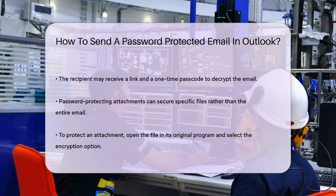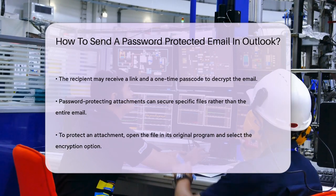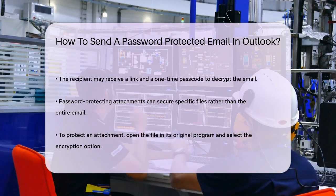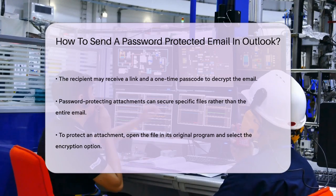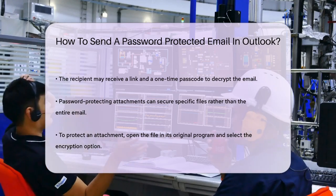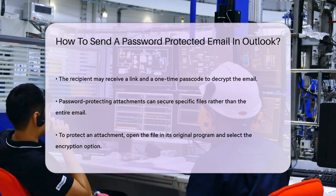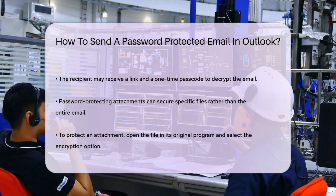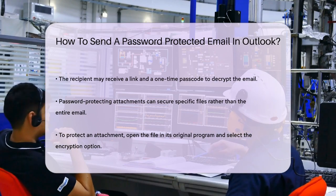For example, in Word, go to File > Info > Protect Document > Encrypt with Password. Enter a strong, unique password and confirm it. Save the document with the new password protection, then attach it to your email in Outlook.